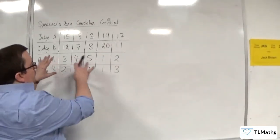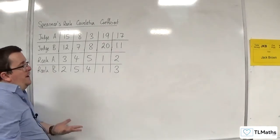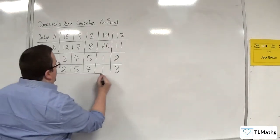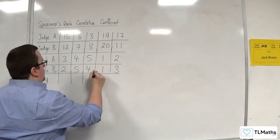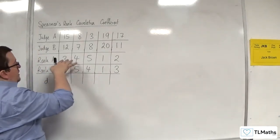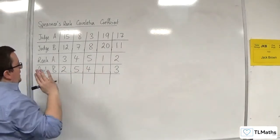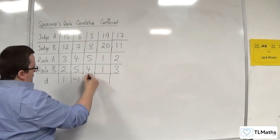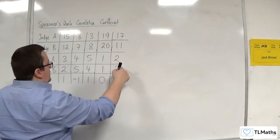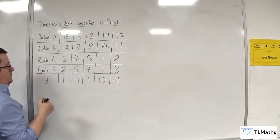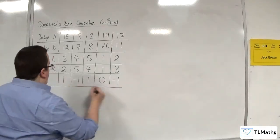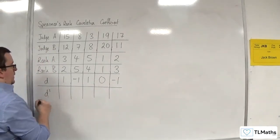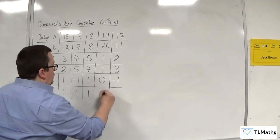However, the formula that we're going to use requires us to find the difference in the ranks. So D here represents the difference in the ranks. So we're going to do, now you can either do rank A's take away rank B's, or the other way around. It doesn't matter. 3 take away 2 is 1. 4 take away 5 is minus 1. 5 take away 4 is 1. 1 take away 1 is 0. 2 take away 3 is minus 1. What we then do is square each of the differences. So we're going to get 1, 1, 1, 0, 1.